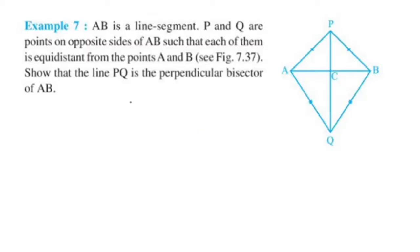Hello everyone, welcome to this video. We are going to take a look at Example 7. Let's talk about the question. AB is a line segment. P and Q are points on opposite sides of AB such that each of them is equidistant from the points A and B.